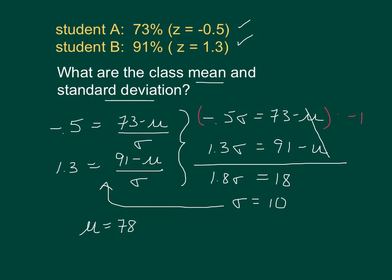We've taken two equations, solved them, and we've learned that the mean, the class average on this test was a 78 and the standard deviation was 10. So about 68% of the students got between a 68 and an 88. That's it.